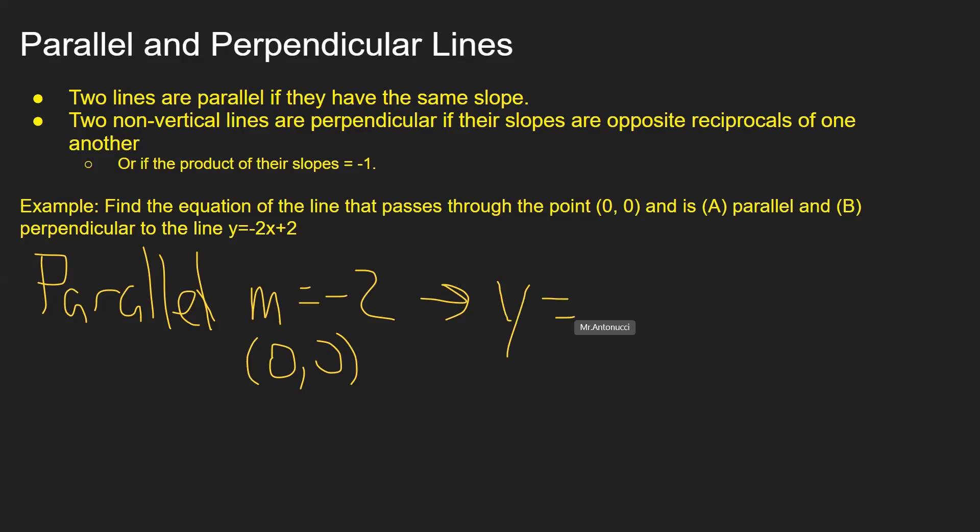So Y = Y₀, which is 0, plus the slope -2 times (X - X₀). This simplifies to Y = -2X.